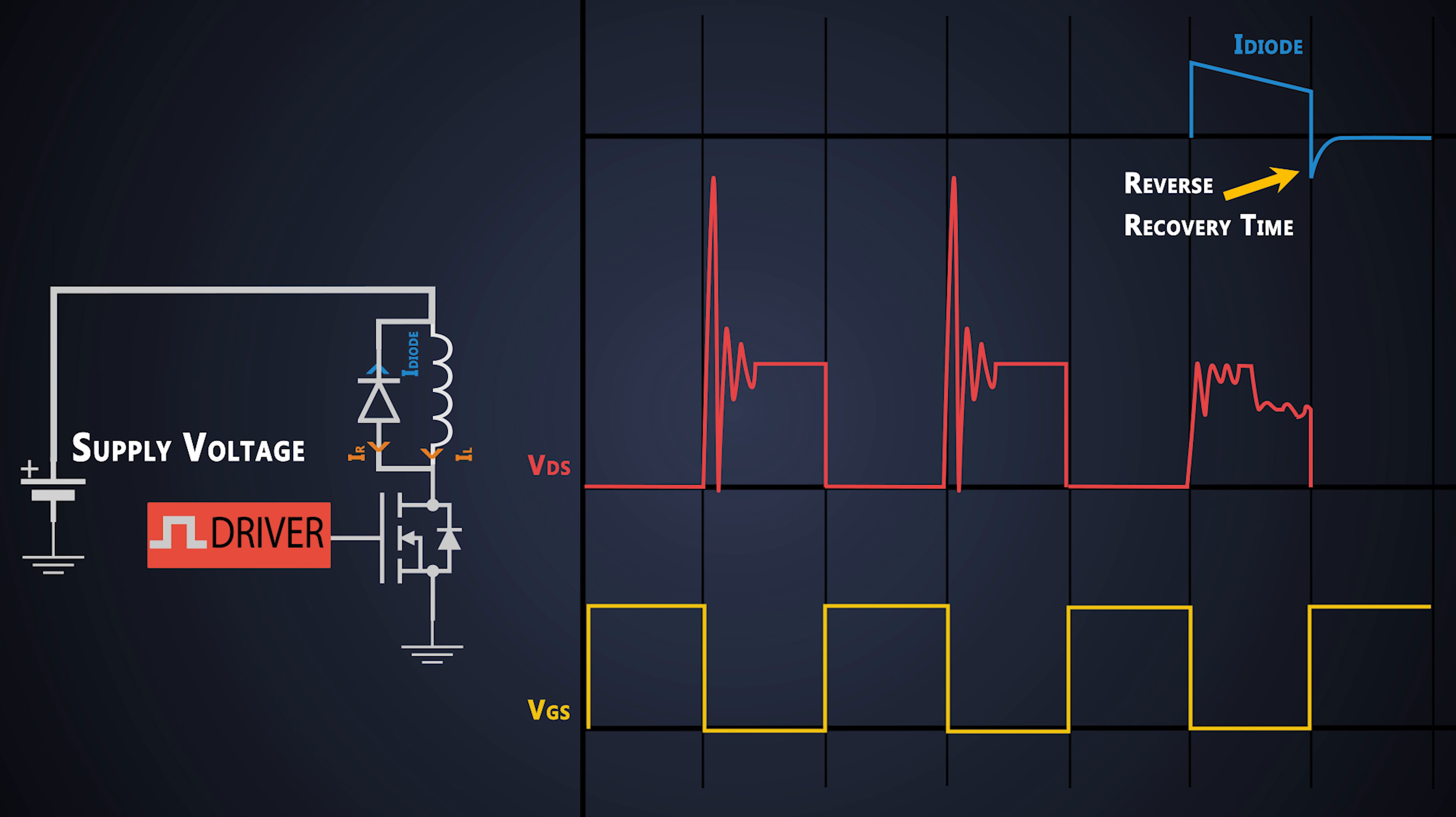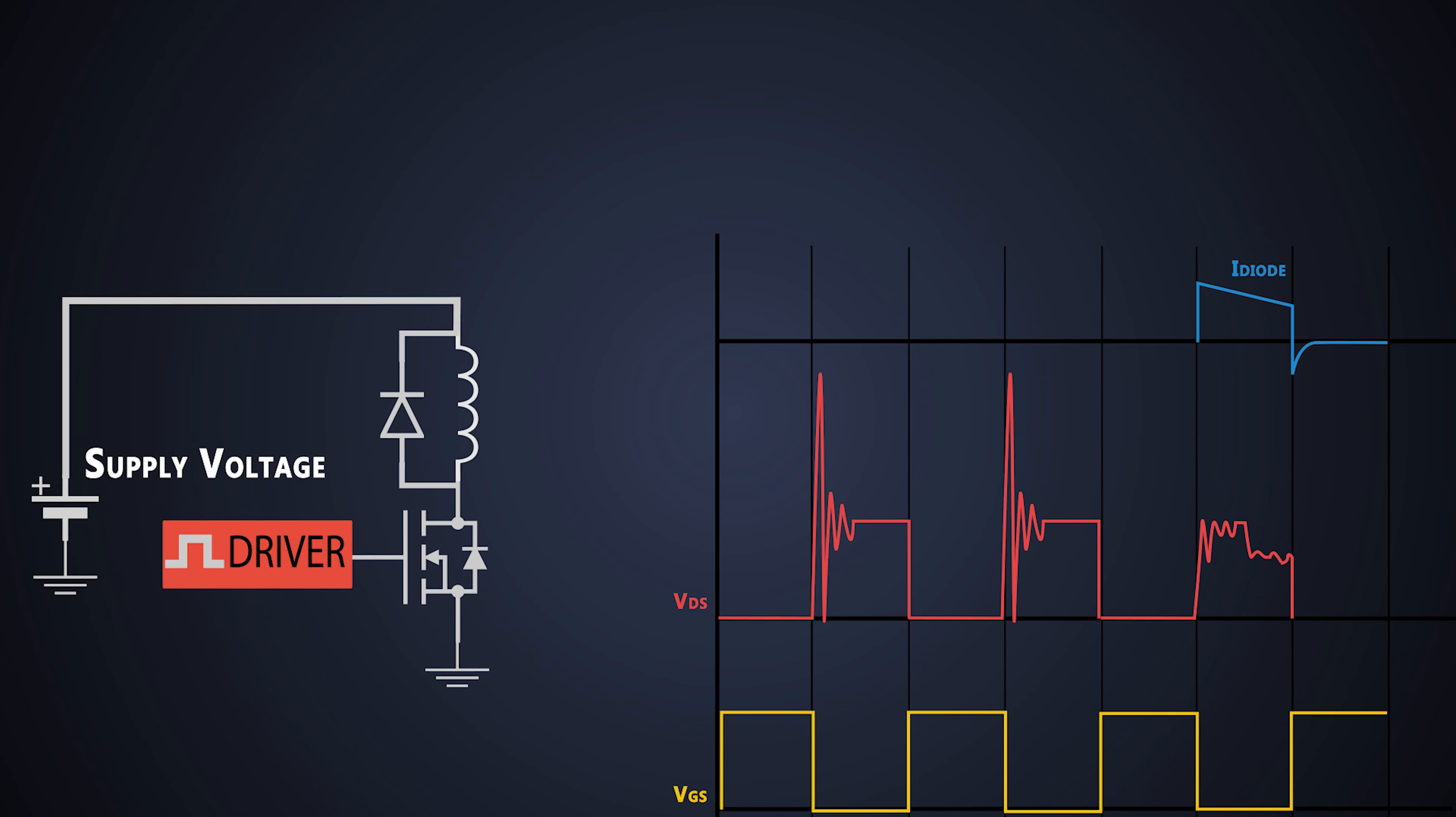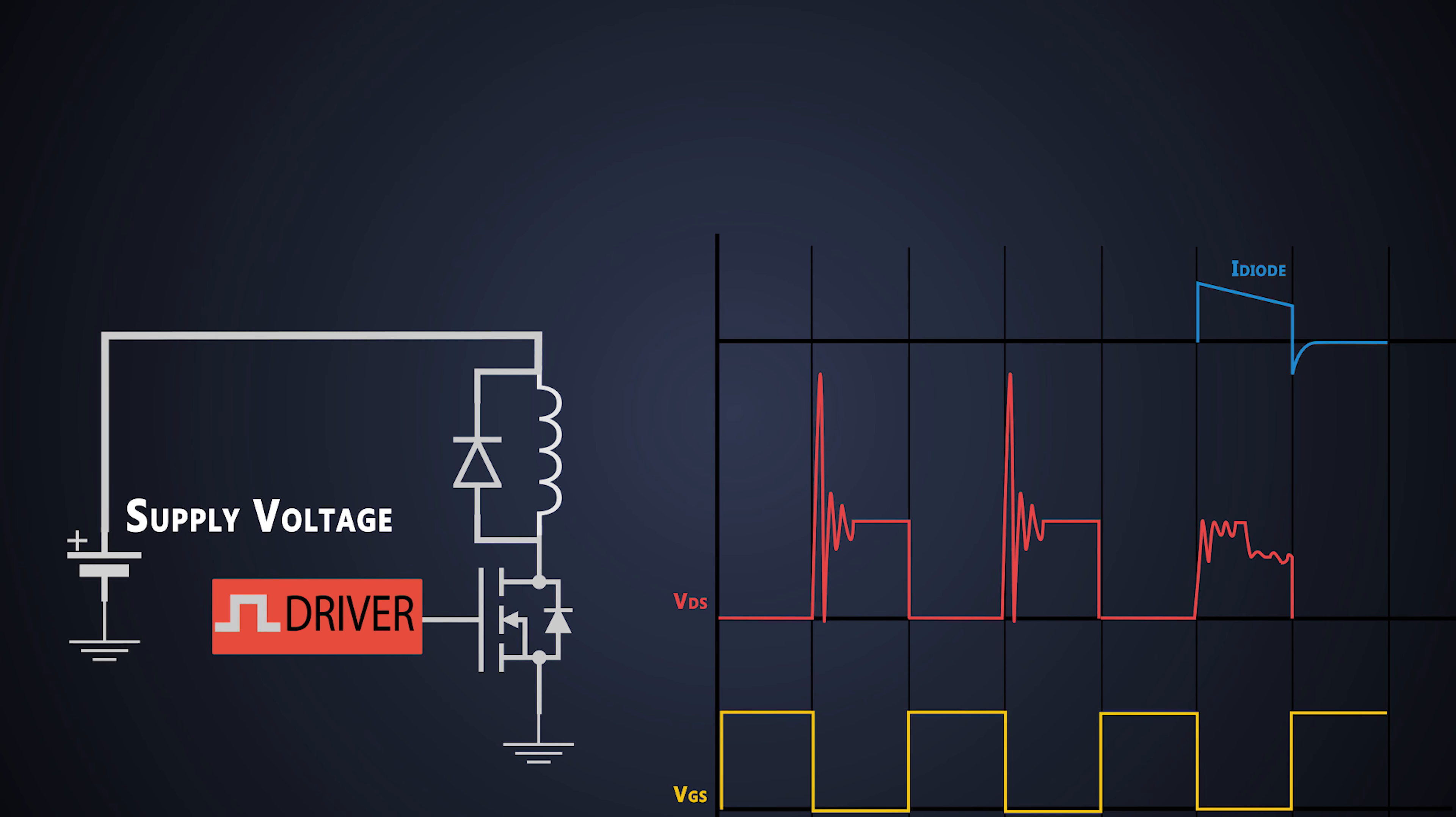This current adds up for a short period of time to the inductor current when the MOSFET turns on, so total drain current increases for a short period of time in the MOSFET. This reverse recovery time and current plays a very important role in the MOSFET switching, which we will see in the next video, where we will understand how a MOSFET behaves when there is an inductive load with waveforms. Till then stay tuned, I have added all the references on this topic in the description.